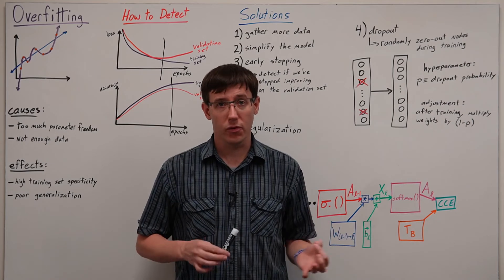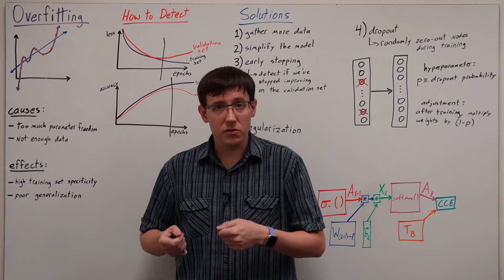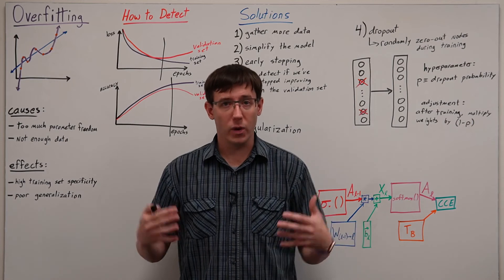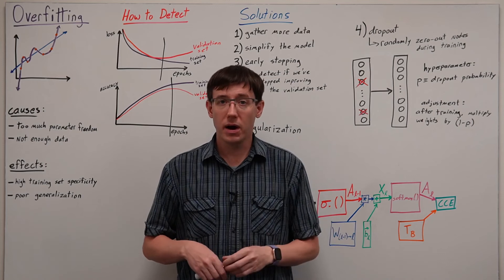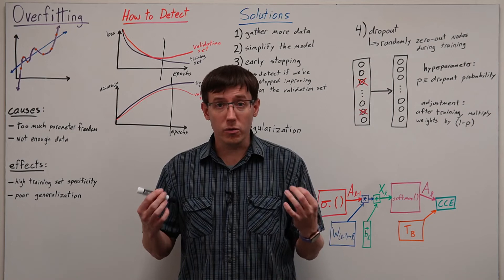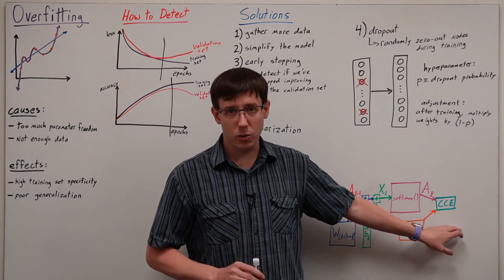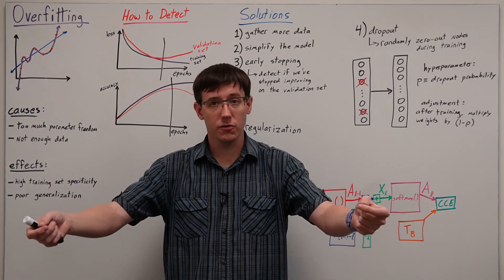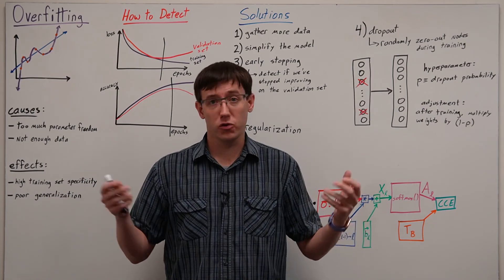The final method I want to talk about for combating overfitting is weight regularization. And this comes back to the notion that overfitting means the weights are getting overly specific. And the idea is that we can discourage weights that depend too much on particular inputs by discouraging the weights from becoming too large. And we do that by changing the loss function that we use to train the network. Specifically, we will add a new term to the loss function that serves as a penalty discouraging large weights.